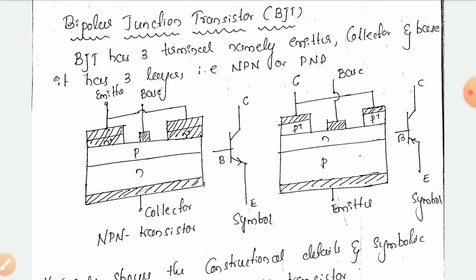It has three layers — that is NPN: N layer, P layer, and N layer — or PNP: that is P layer, N layer. So PNP transistor and NPN transistor are the two types of transistors we have.